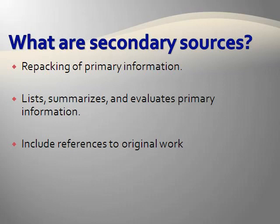Now, let's take a look at secondary sources. Secondary information is a repackaging of primary information. A secondary source may be an article that restates, examines, or interprets the findings of the original primary source research. Secondary literature lists, summarizes, and evaluates primary information and studies so as to draw conclusions concerning our current state of knowledge about a particular subject. In other words, secondary sources interpret the primary literature or guide readers to the primary material. Often they discuss more than one study or experiment at a time.